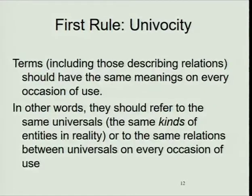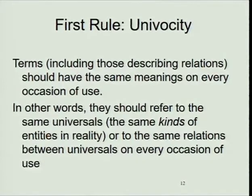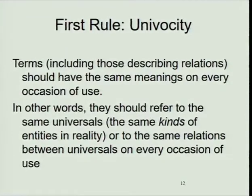Now, some simple rules — these are rules of thumb, but you should try and follow them as hard as you can. The first rule is univocity: if you have a term in your ontology, it should have the same meaning on every occasion when you use it or when anyone using your ontology will use it. An example of why somebody might not follow that rule is where someone is building an ontology for a purpose directed towards two communities, both of which use a certain term with completely different meanings.